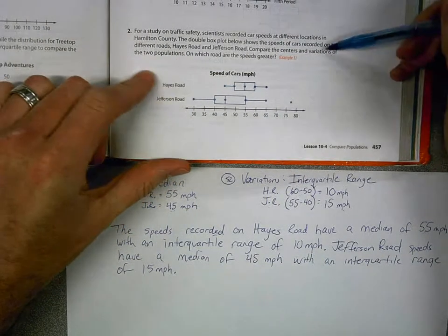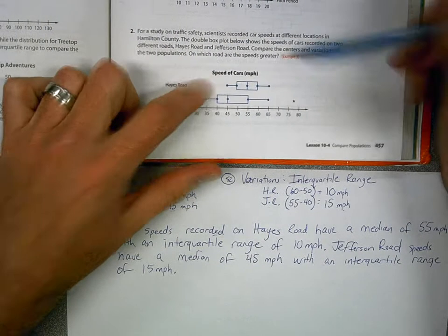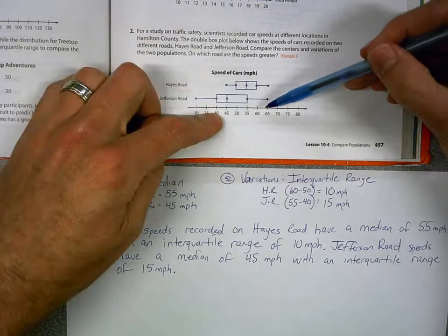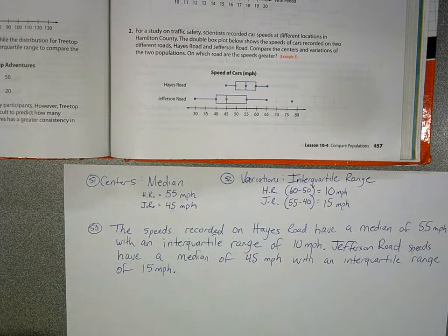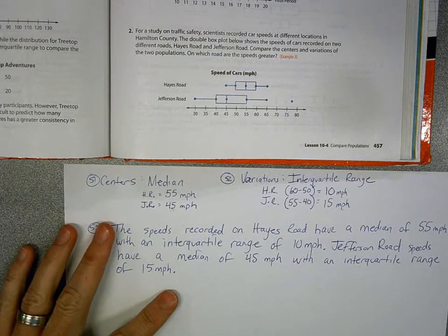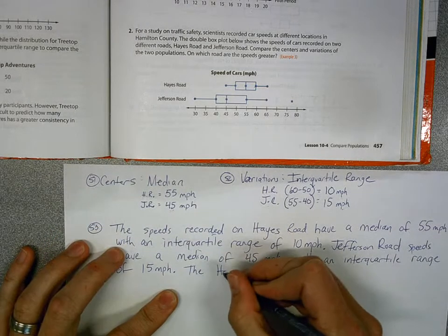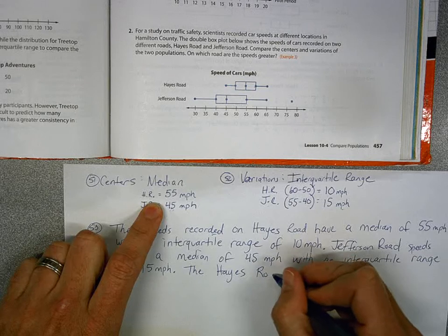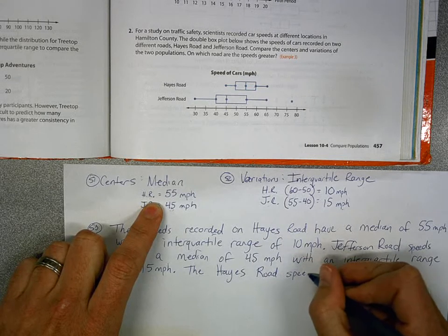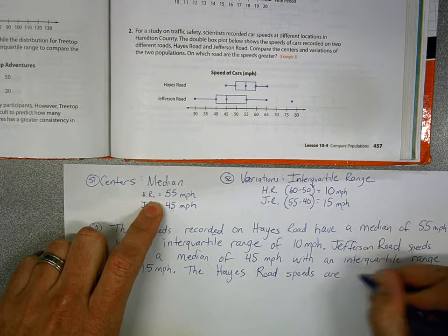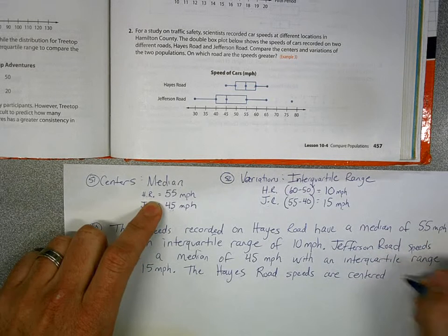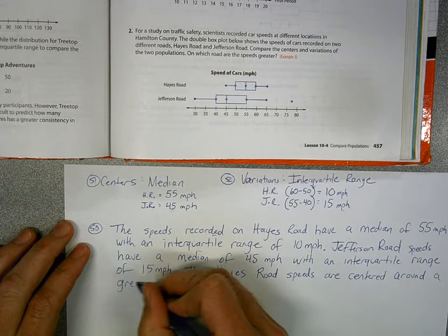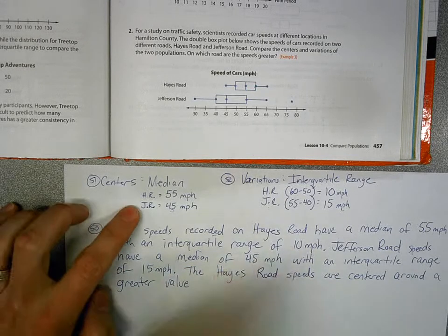So, on here it says, compare the centers and variations of the two populations. On which road are the speeds greater? So, remember, it all kind of depends on the car, and we have a lot of data here. So, if you're talking about the centers, maybe you could say something like, the Hayes Road speeds are centered around a greater value, you could say a greater speed, faster speed.